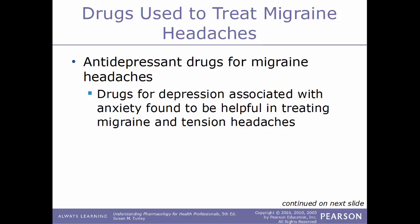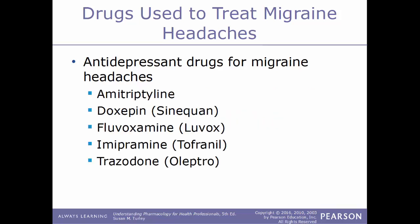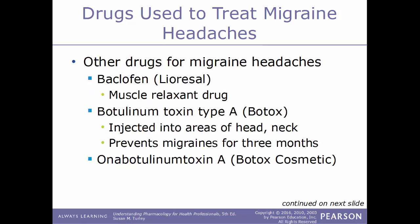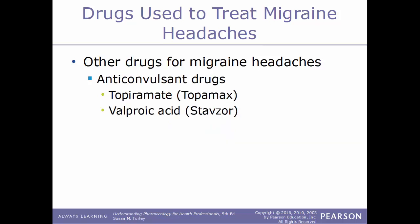Antidepressants are another type of drug used for migraines — drugs for depression associated with anxiety have been found helpful in treating migraines and tension headaches. Examples include amitriptyline; doxepin, also known as Sinequan; fluvoxamine, known as Luvox; imipramine, known as Tofranil; and trazodone, also known as Elavil. Other drugs for migraines include baclofen, a muscle relaxant known as Lioresal; botulinum toxin type A, commonly called Botox, injected into areas of the head and neck to prevent migraines for up to three months; and onabotulinumtoxinA, also known as Botox Cosmetic. Anticonvulsant drugs are also used, including topiramate, also known as Topamax, and valproic acid, also known as Stavzor.